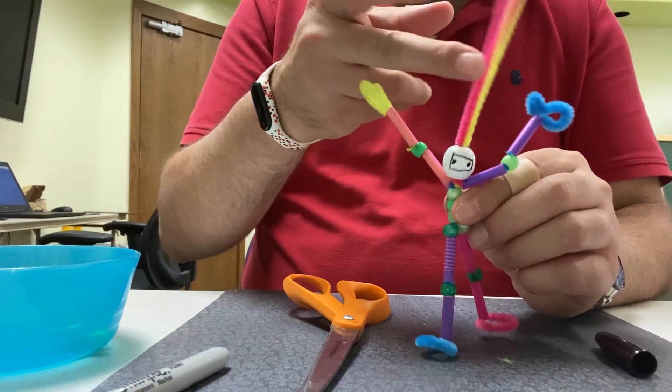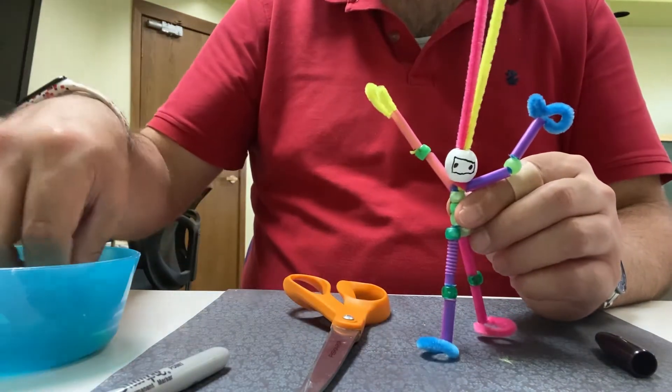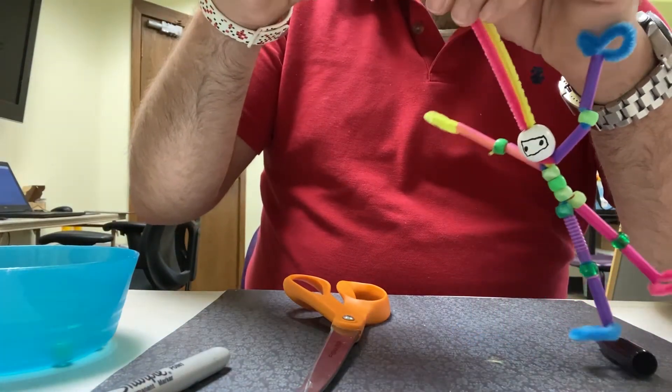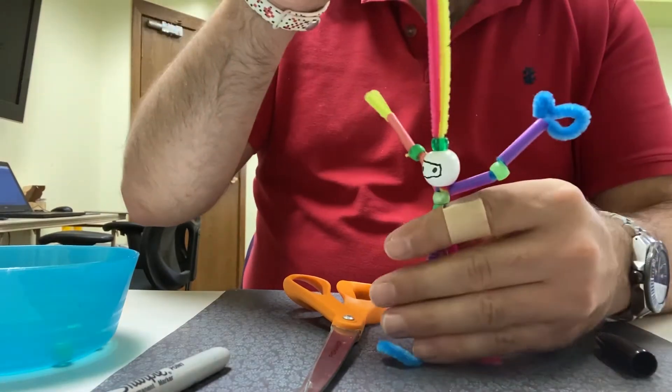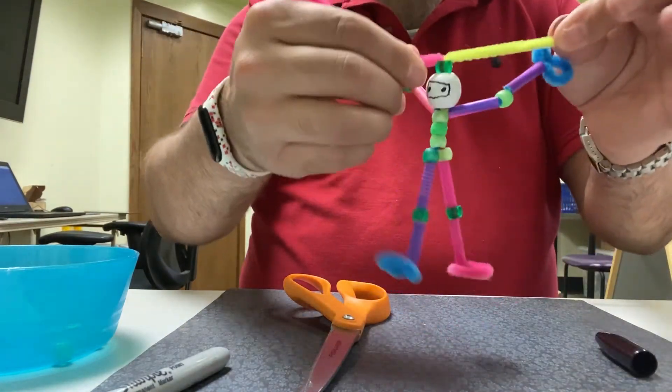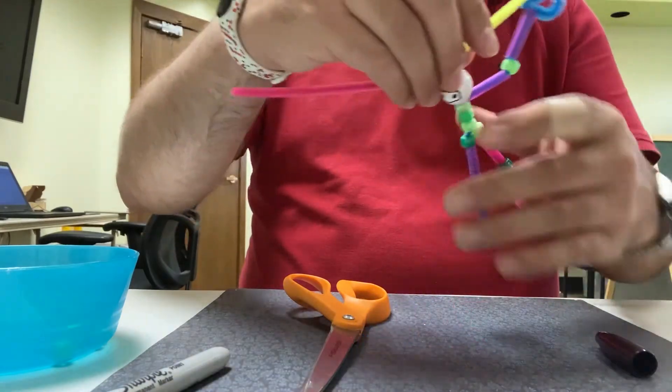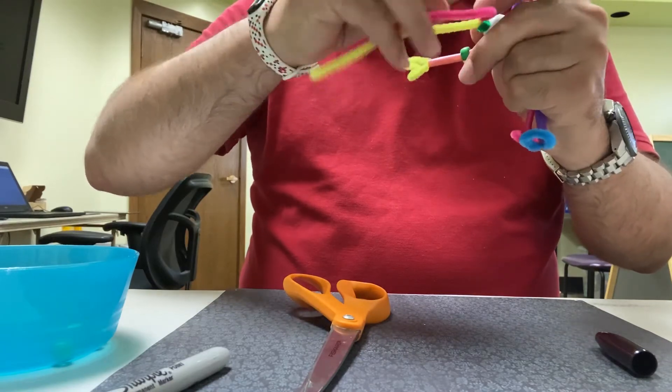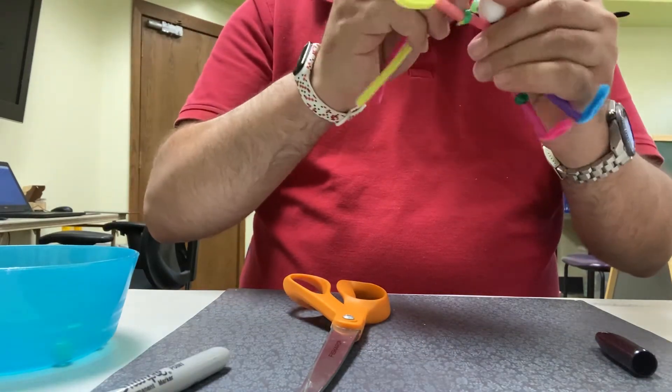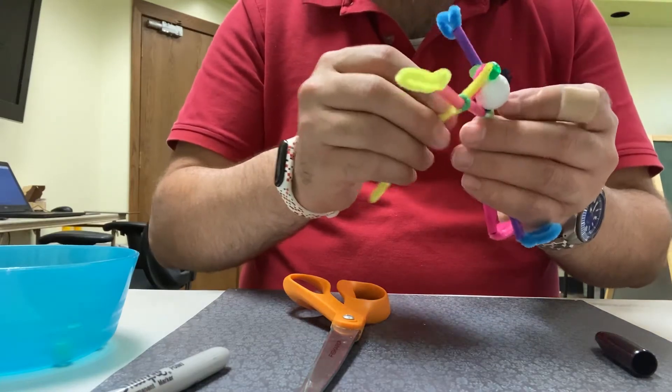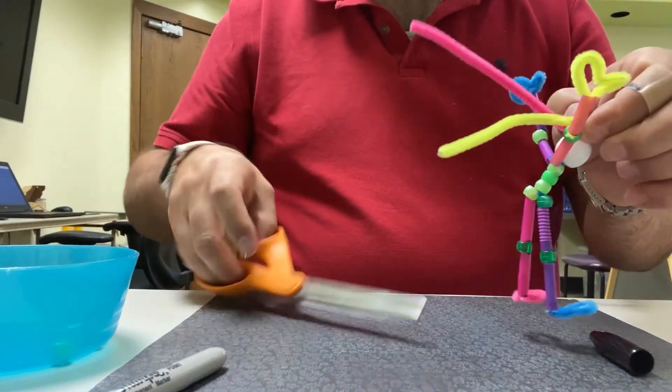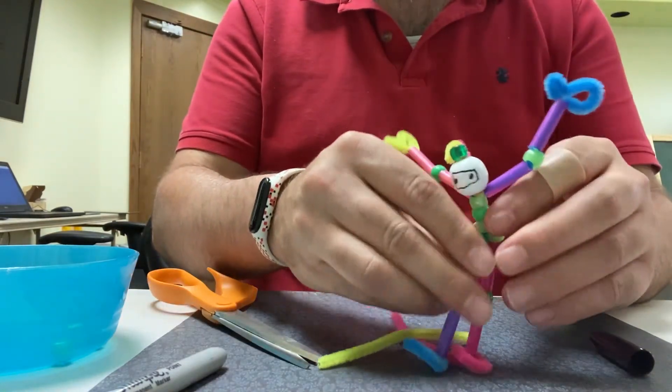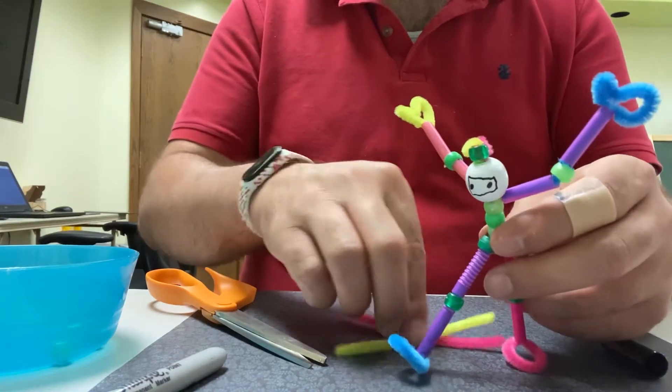Now the final part is we notice we have this big wobbly part up here. I like to give my ninja a little bit of a cool hat feature like that. So we're going to tighten it up. We'll give it a couple twists. Bend it back so it doesn't fall off like that. And then we're just going to take a pair of scissors and cut through the excess. And there you go.